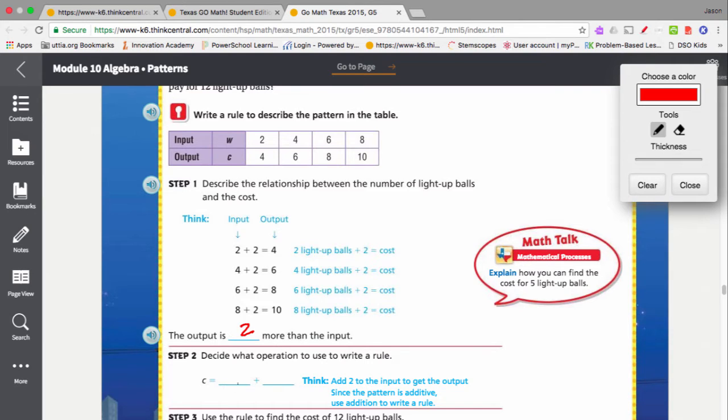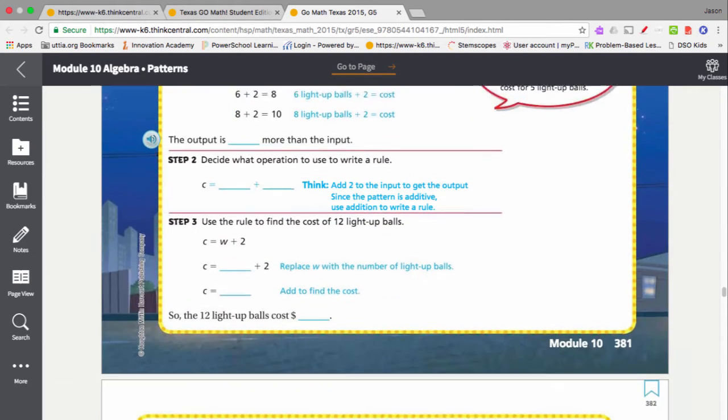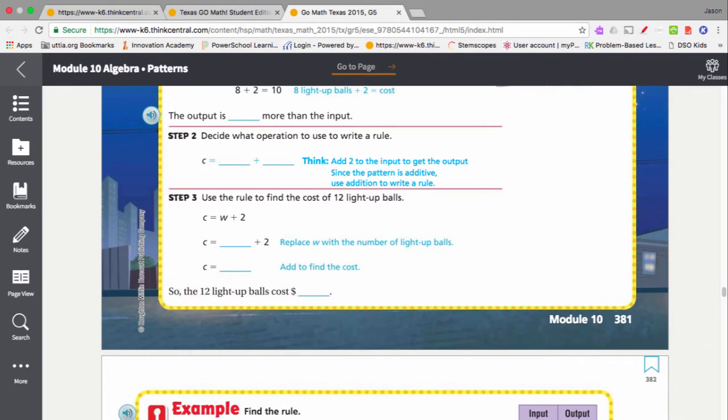So C equals W, because that's our input variable, plus two because that's how many more the output's going to be. Now, once we know that that's the rule, we can use that rule to solve for the amount that we want. If I know that whatever W is, C is going to be W plus two.